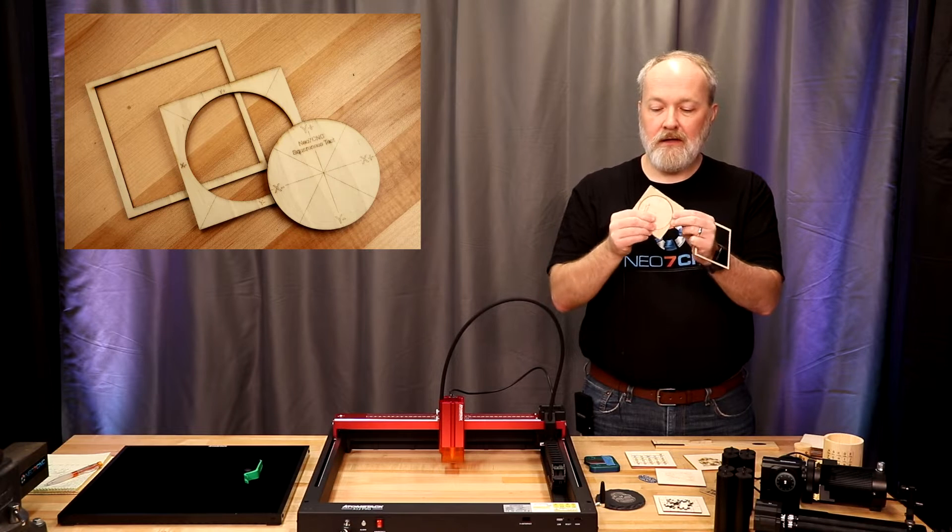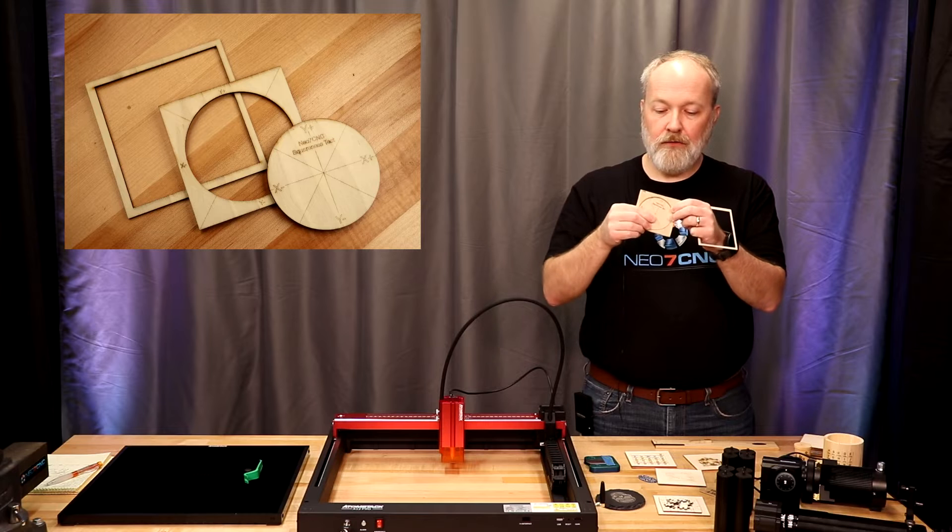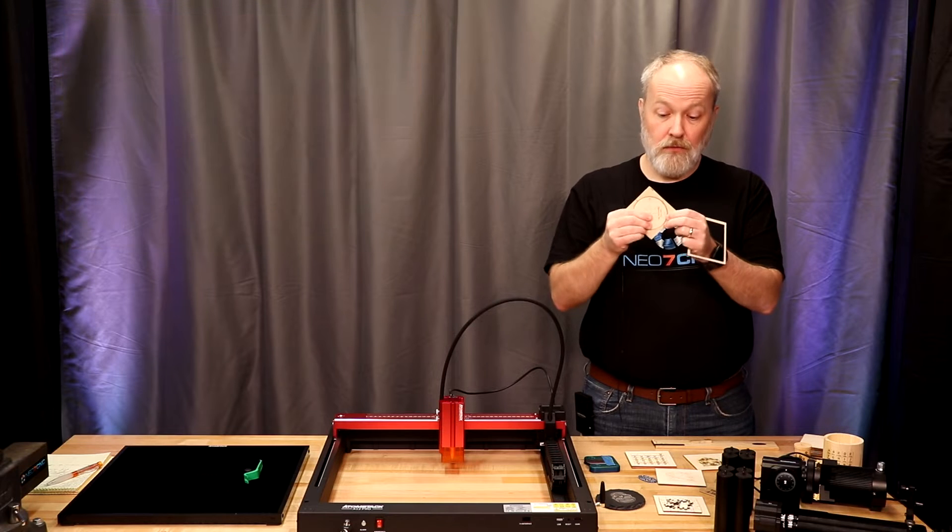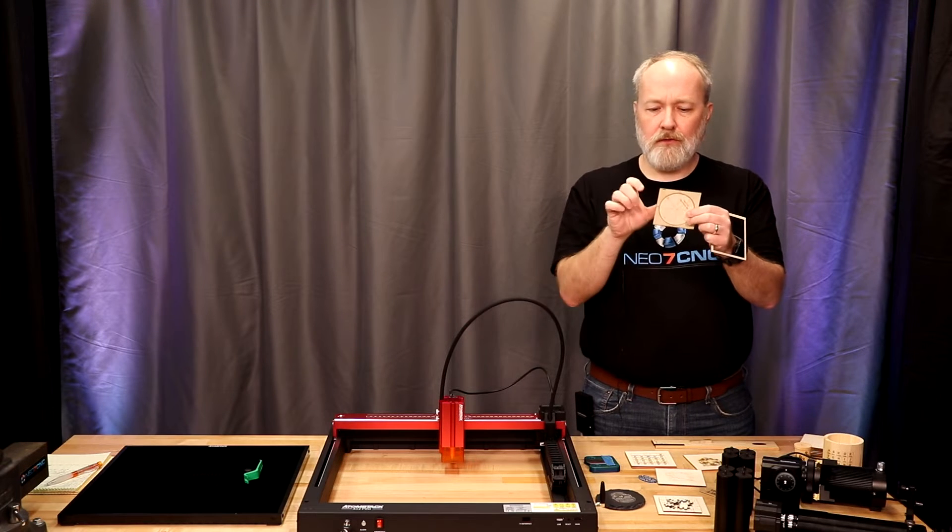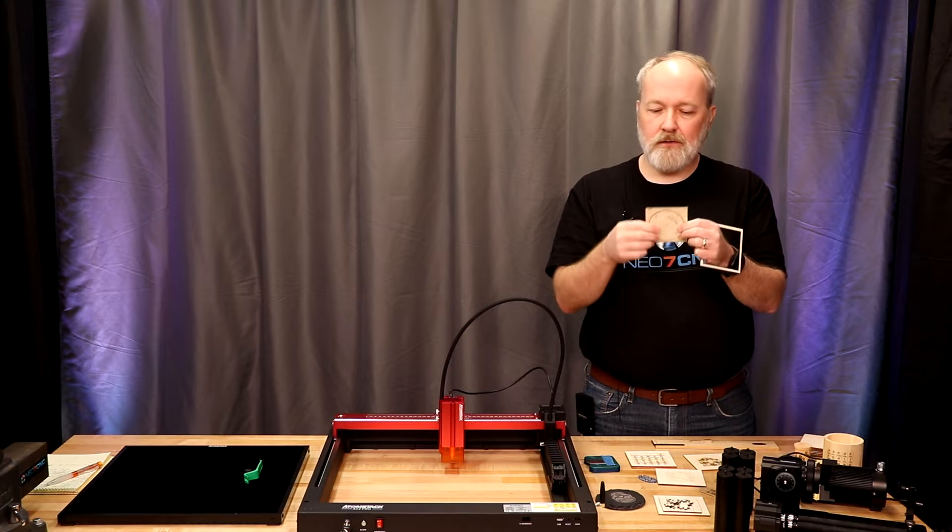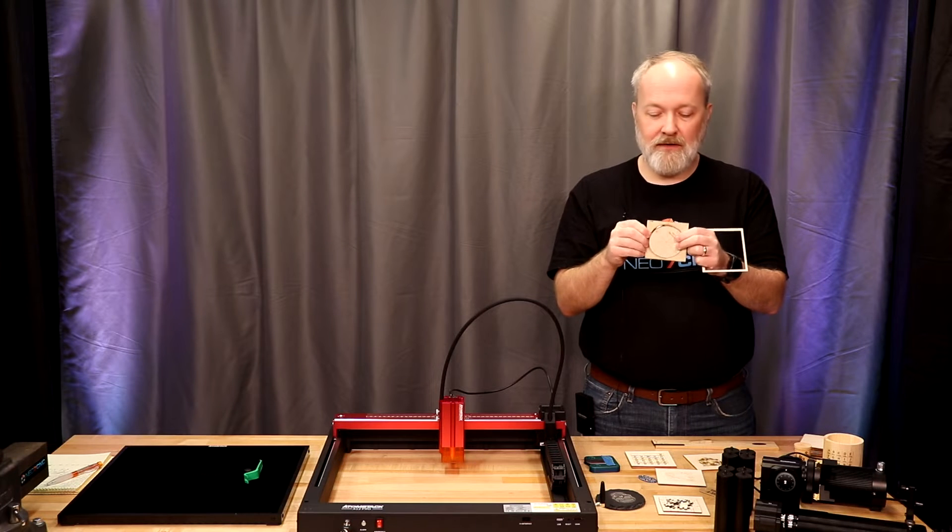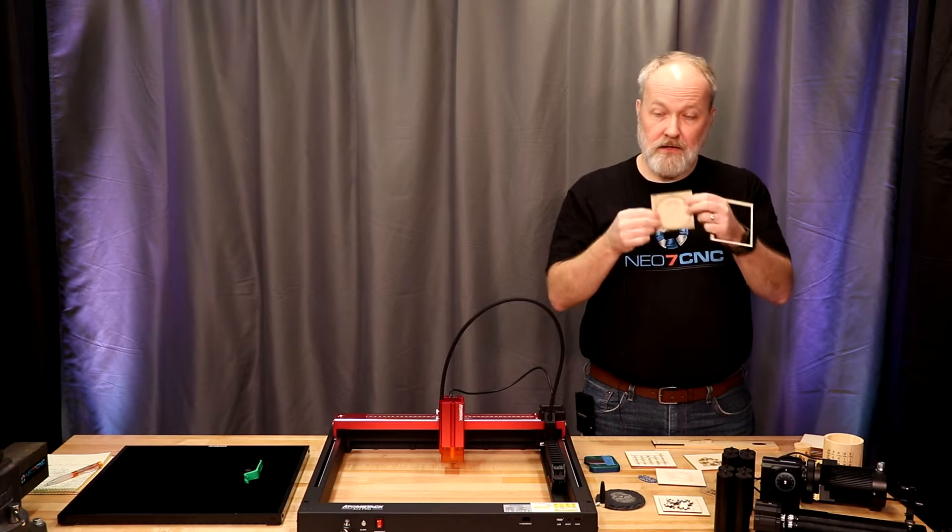So after seven tests, I was able to successfully get the Neo7 CNC squareness test to execute correctly. And the circle does rotate inside the square. It does get snug, but for the most part it rotates all the way around if you really try hard. So there's a little something going on. It could be the material too, because this isn't the best material, but all in all it turned out great.